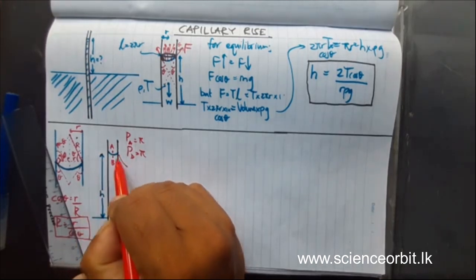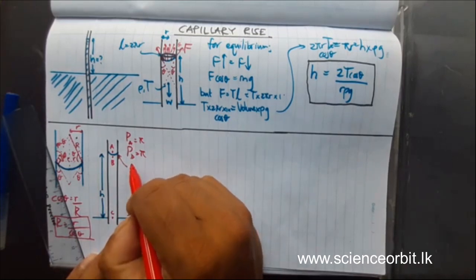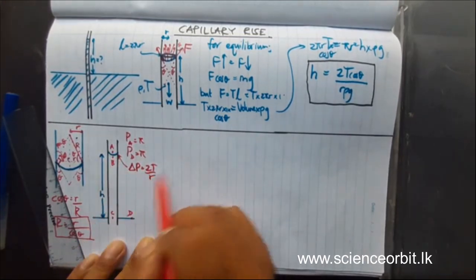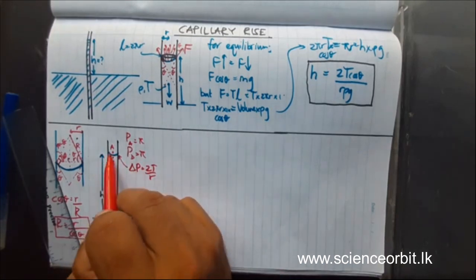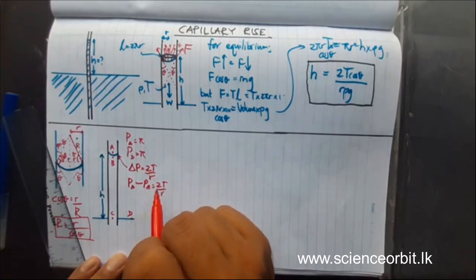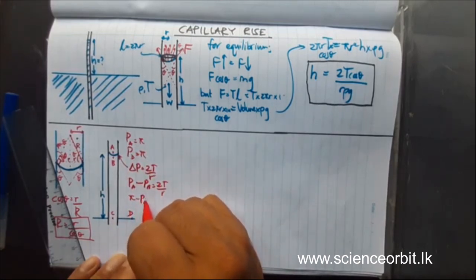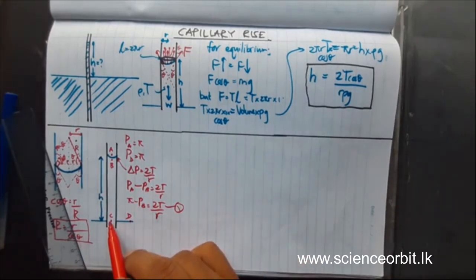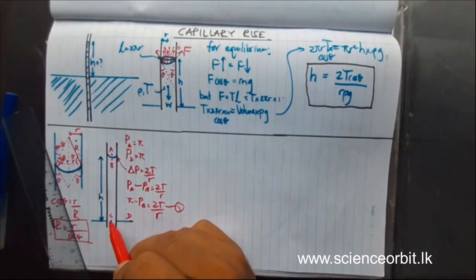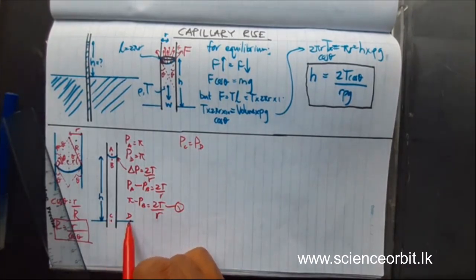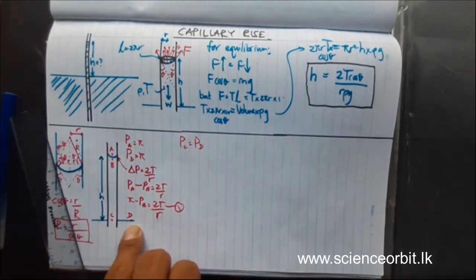The pressure difference equation we learned earlier is: change in pressure equals 2T over R (using the radius of the meniscus, capital R, since there is only one free surface — for a soap bubble it would be 4T/R). Point A is inside the curve, so pressure at A minus pressure at B equals 2T over capital R. Substituting pi for P_A: pi minus P_B equals 2T over capital R — this is equation 1. For points C and D, they are at the same horizontal level in a liquid at rest, so their pressures are equal.